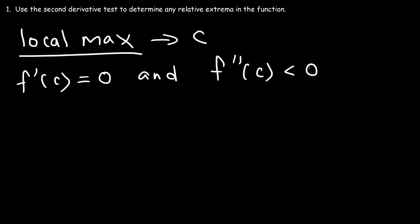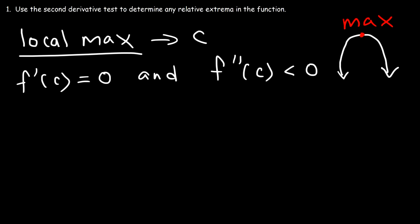Whenever the second derivative is negative at a critical number, it's going to be concave down, so you're going to have this shape. You can see clearly from the graph that there is a maximum at this point — that's the c value we need. That's where we have the horizontal tangent, which is typical of a local maximum or relative maximum.